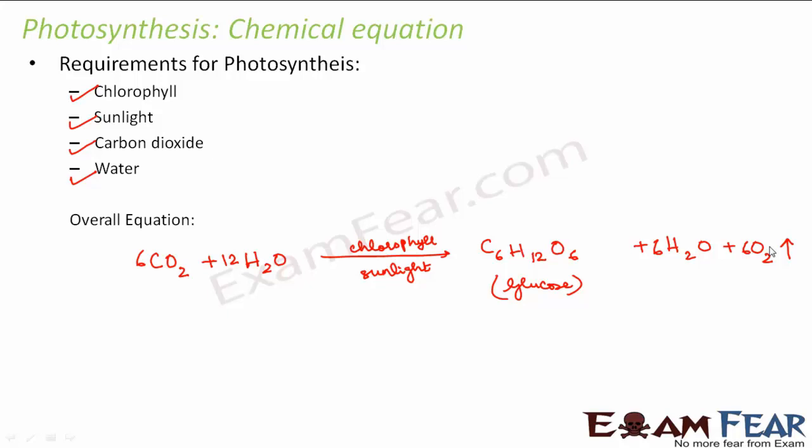Other than chlorophyll, sunlight, carbon dioxide, and water, plants also need many other nutrients like nitrogen, phosphorus, and sulfur. Those nutrients are classified into macronutrients and micronutrients depending upon the requirements of the plants. Nutrients needed in large amounts are called macronutrients; nutrients needed in lesser amounts are known as micronutrients. Many glucose molecules are produced and several glucose molecules join together to form starch, which is stored as food inside the plants.